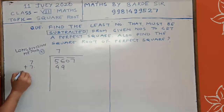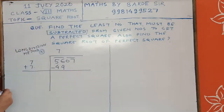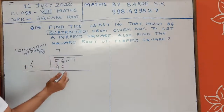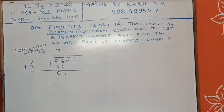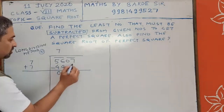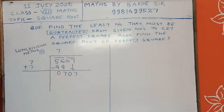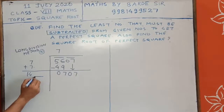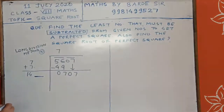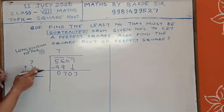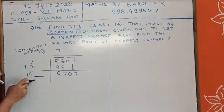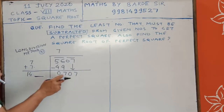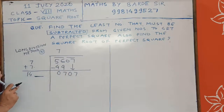So we place 7, subtract: 56 minus 49 is 7, and here remainder is 07. Copy down the complete pair: it is 07, so the number becomes 707. Add 7 plus 7 to get 14. Now at the ones digit you need to write some number and multiply that digit by the whole number, and the product should be less than 707.